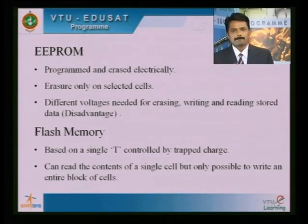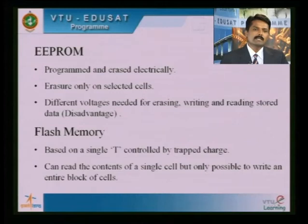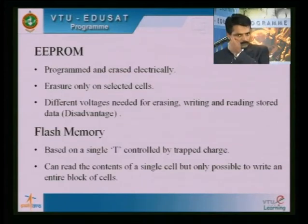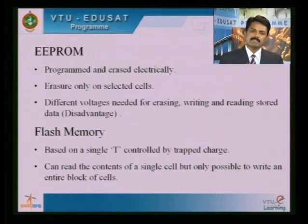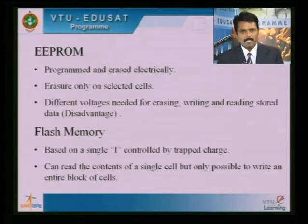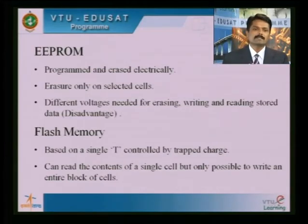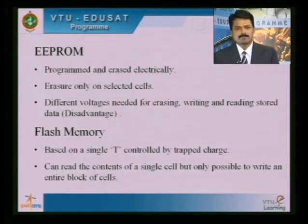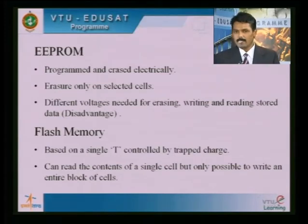Another ROM type is the Electrically Erasable Programmable ROM — EEPROM. In this case, electricity is used to both program and erase the content. One advantage over EPROM is that only selected cells can be erased, whereas with EPROM, exposing the chip to ultraviolet rays erases all content. The disadvantage of EEPROM is that it requires different voltages for erasing, writing, and reading the stored data.